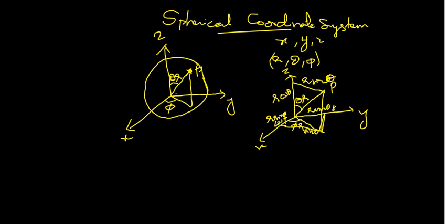These values come from trigonometric relations — by the Pythagorean theorem we can apply and find these values. So what is R? In a circle the radius is given by R equal to square root of X squared plus Y squared. Here in three dimensions, R is equal to the square root of X squared plus Y squared plus Z squared.